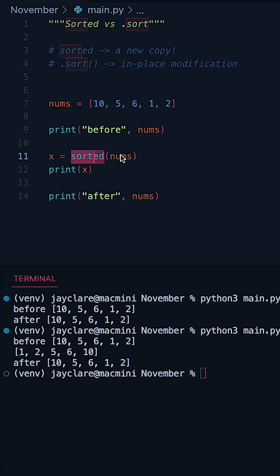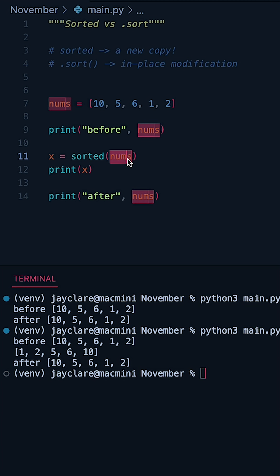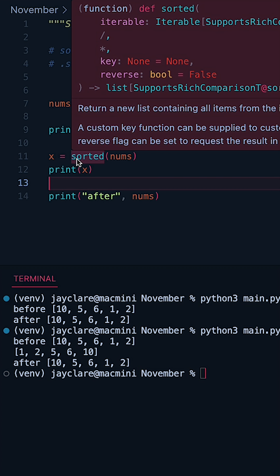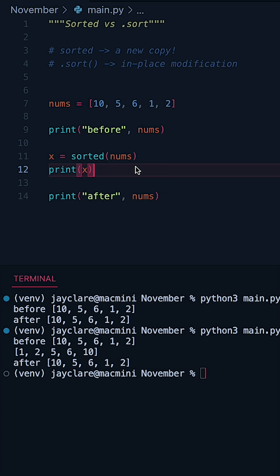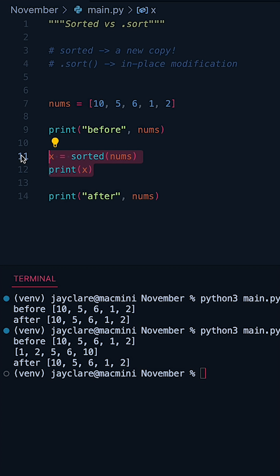That's because the sorted function doesn't do it in place. It takes in some sequence and then returns a sorted list of that sequence — it doesn't affect the original in any way. So in this case, if you wanted a sorted copy of your list but wanted to maintain the original, sorted is going to be the way to go.